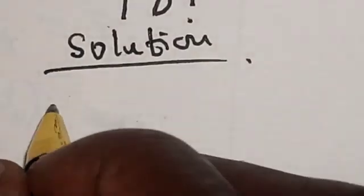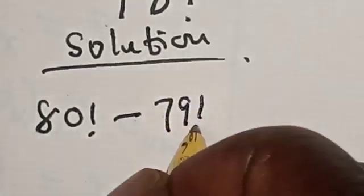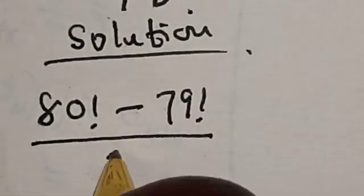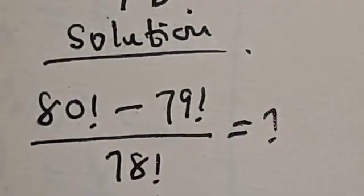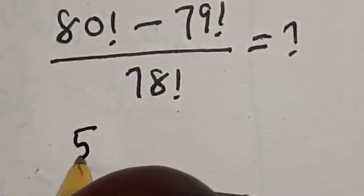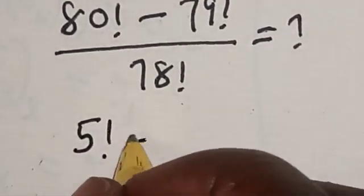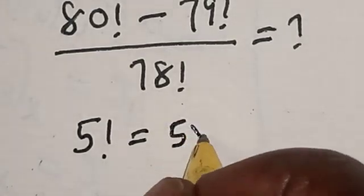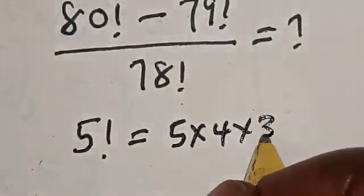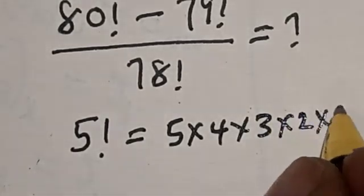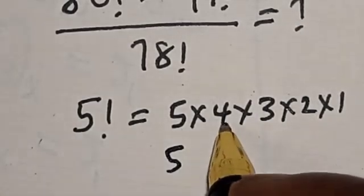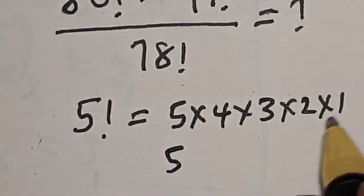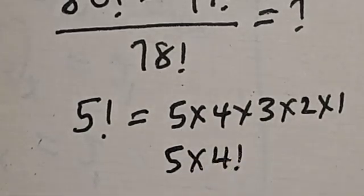We have the given question: 80 factorial minus 79 factorial divided by 78 factorial is equal to what. Now remember that if you have 5 factorial, this is equal to 5 multiplied by 4 multiplied by 3 multiplied by 2 multiplied by 1. We can split it — 5 times 4! — because 4 multiplied by 3 multiplied by 2 multiplied by 1 is simply 4 factorial.